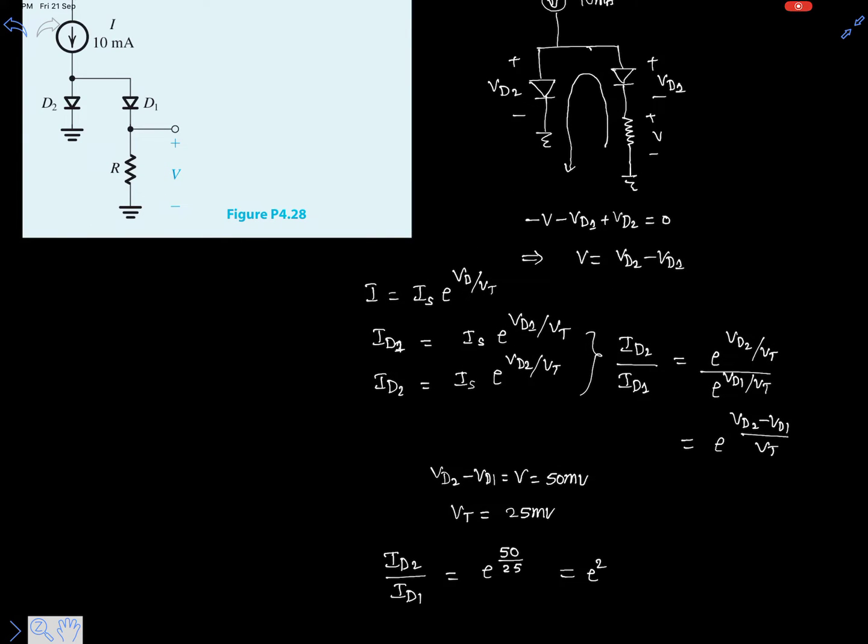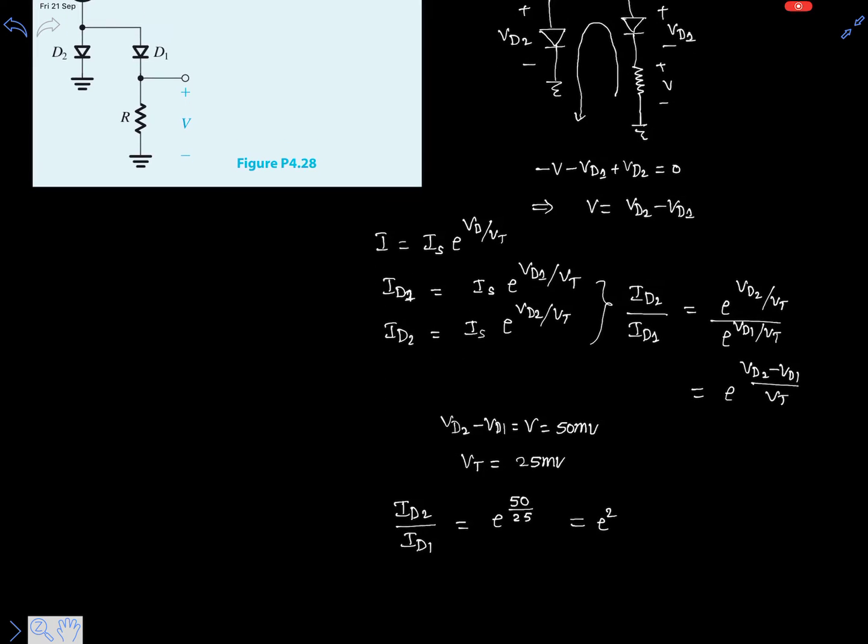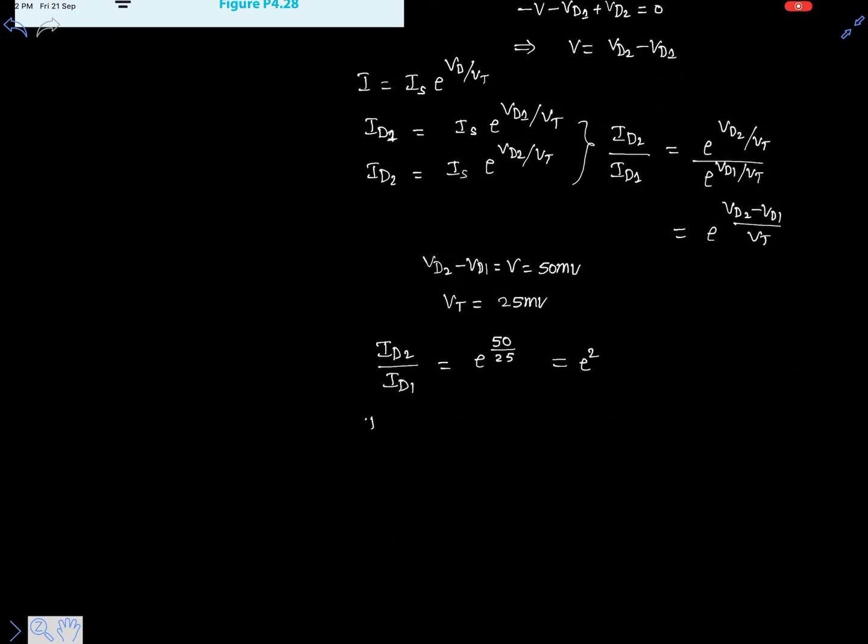So this is the second important point in this question. Now let's have a look at the circuit diagram. Clearly ID2 plus ID1, these are the only two branches that exist in this circuit, clearly equals to 10 milliamps. If you write the KCL equation, it also yields the same result.